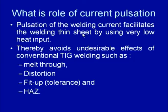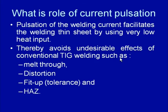The ability to provide low heat input helps in avoiding the undesirable effects related to the high heat input normally associated with conventional TIG welding. In conventional TIG, a constant value of current is continuously supplied, leading to high heat input to the base material especially for thin sheets. High heat input during welding of thin sheets causes melt-through, distortion, fit-up problems, and a wider heat affected zone.